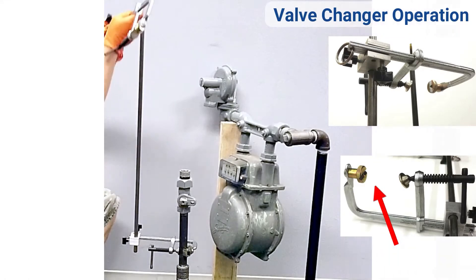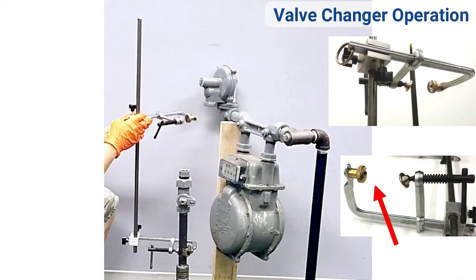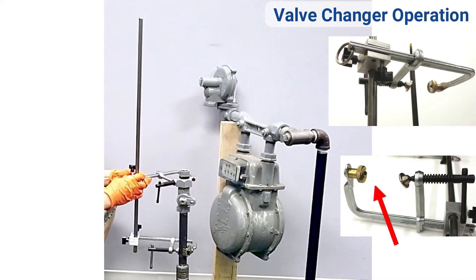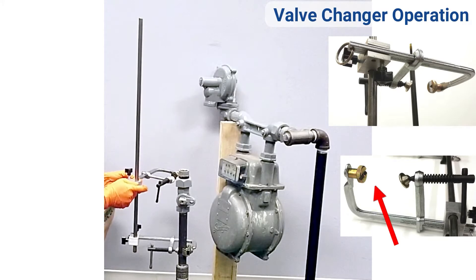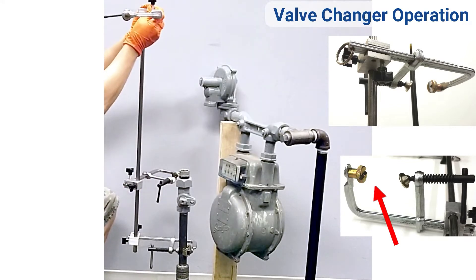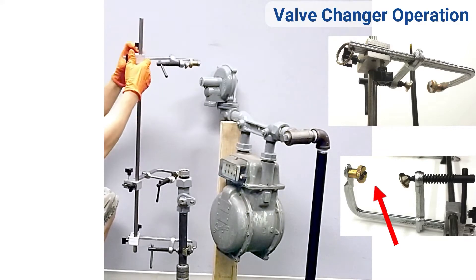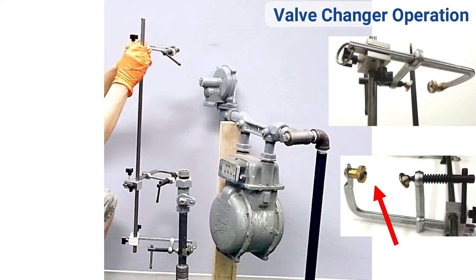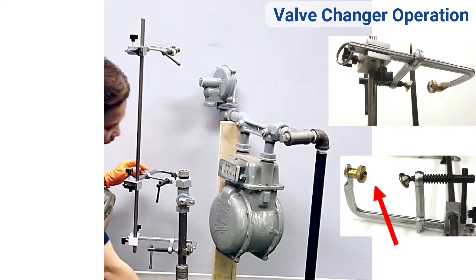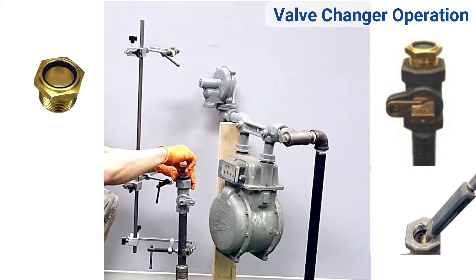Fit the valve changer shaft jaw clamp assembly near the top of the meter valve. Fit the second valve changer shaft jaw clamp assembly near the top of the shaft. Tighten the sight glass on top of the meter valve.